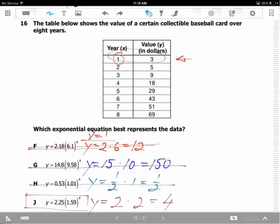Let's try the J answer. If x equals 2, I have 2.25 times 1.59 to the power of 2. That's approximately 2 to the power of 2, which is 4.